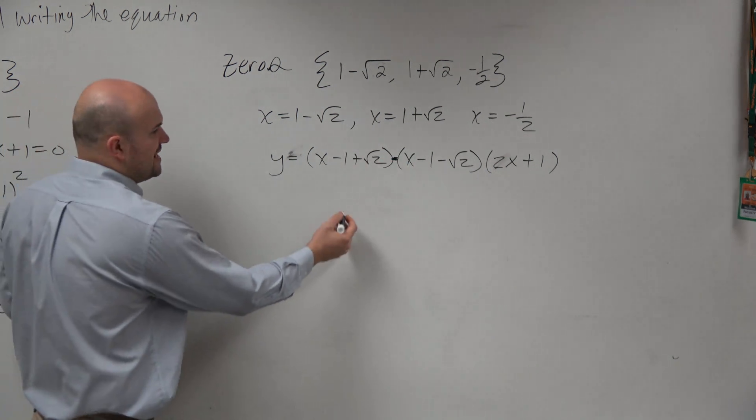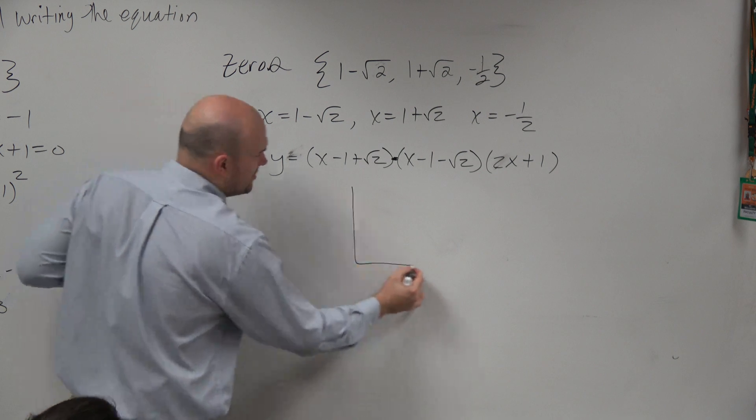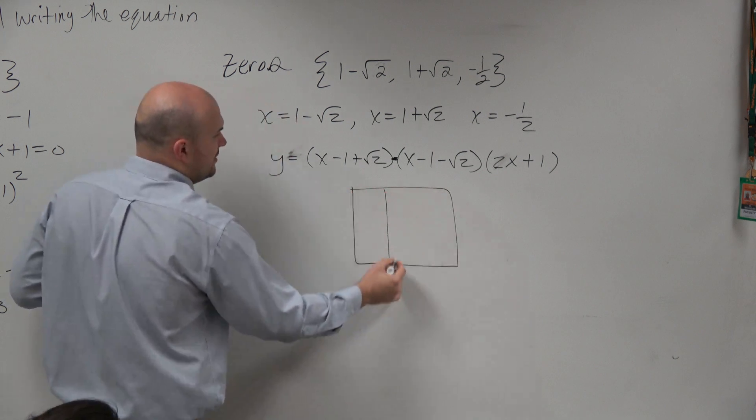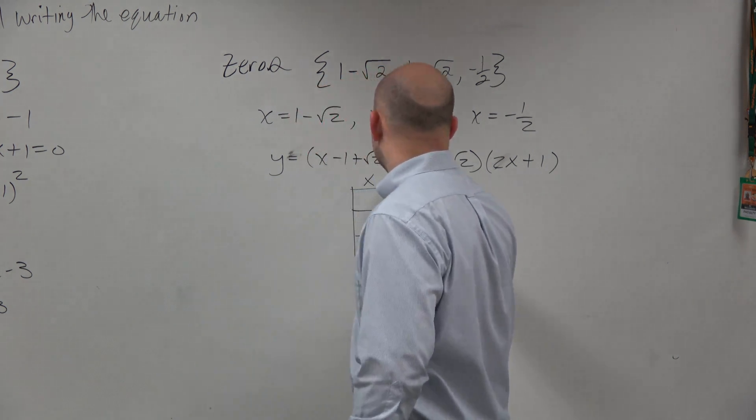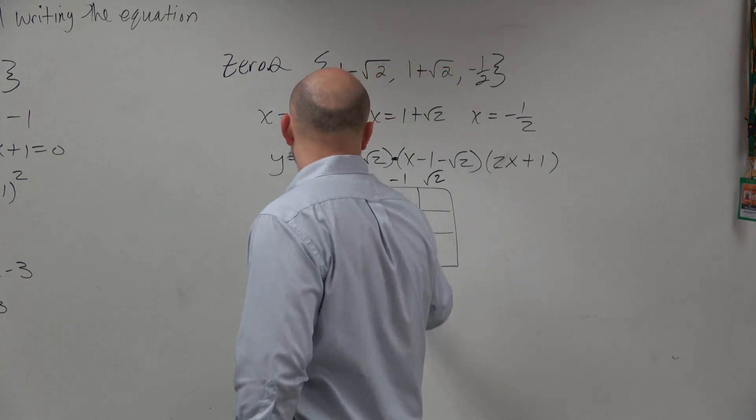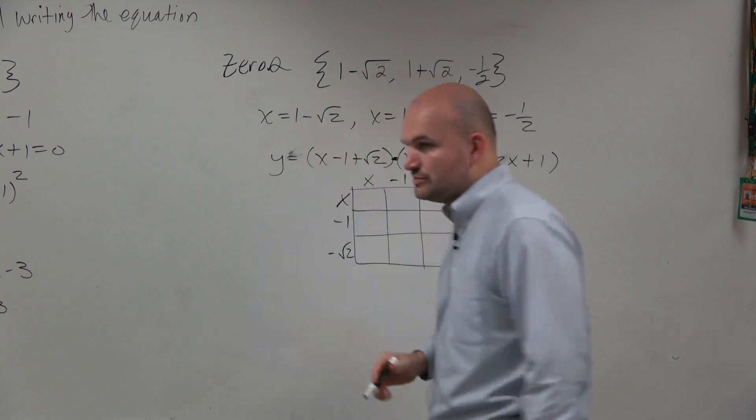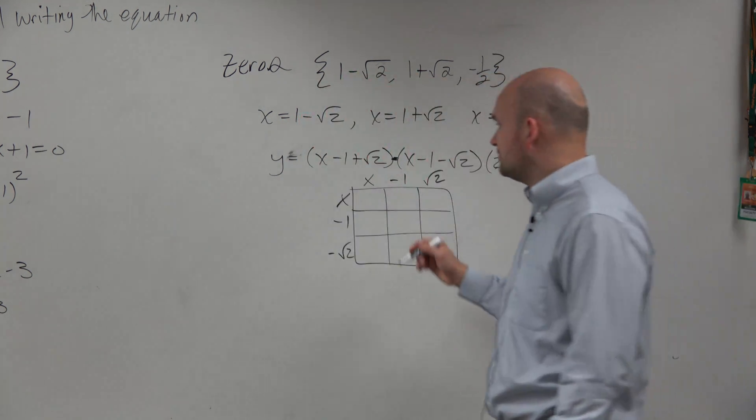I really do not like doing trinomials using distributed property. There's nothing wrong with it, but I usually will miss something or make a mistake. So just like I kind of did in class, I'm just going to use the long form in this case to multiply these out.